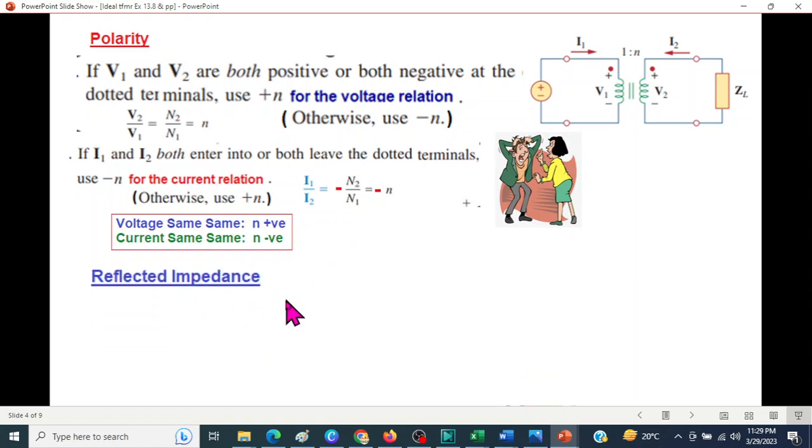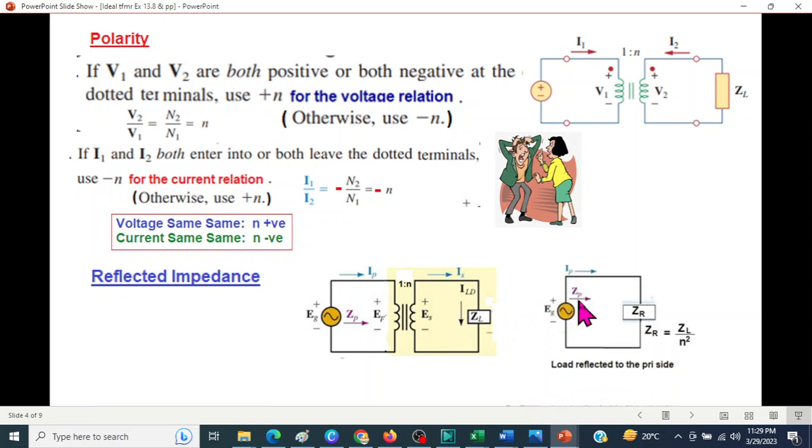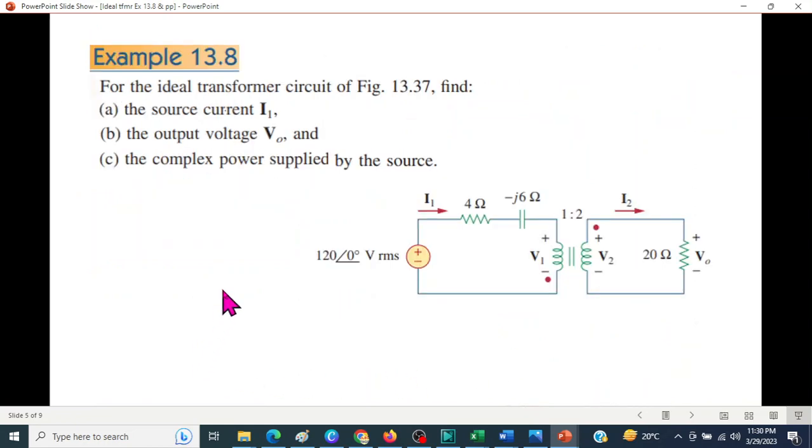Another thing that we'll be using is called reflected impedance. This is the circuit, we have a transformer, and in the secondary, a load is connected. The easiest way to solve this type of circuit is to convert the load, or bring the load into the primary side. So we reflect the load into the primary side. Our circuit will look like this now. This load reflected to the primary side will be called ZR, and the value of ZR will be ZL divided by N square, number of turns square. Now, this circuit we can easily solve.